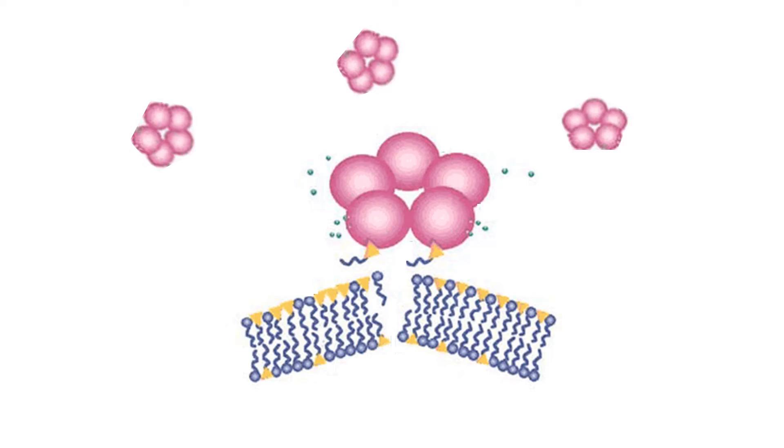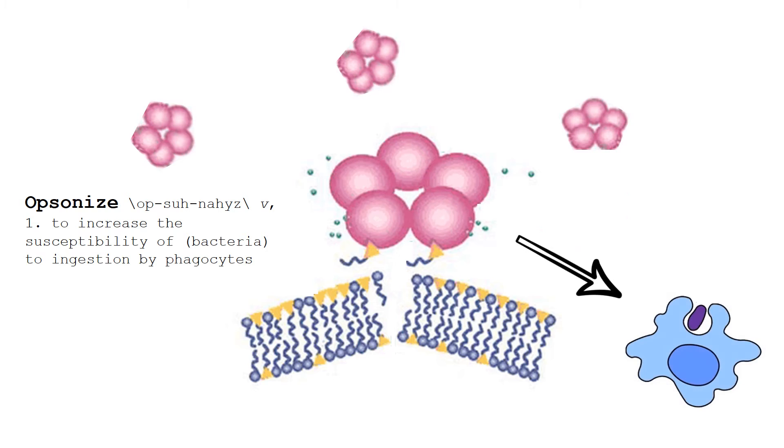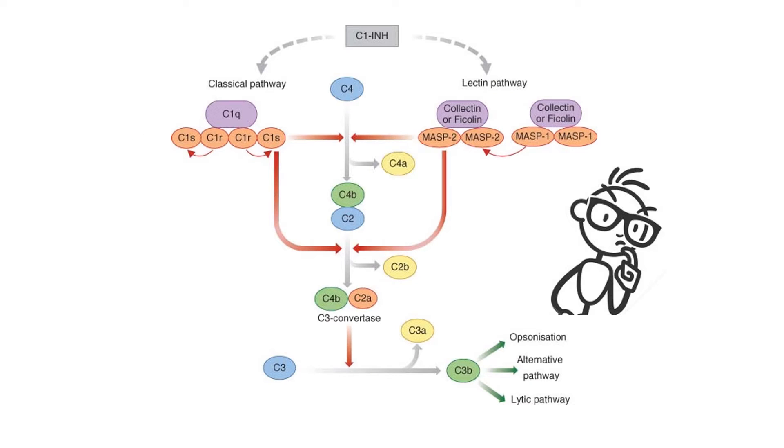When CRP binds to this ligand, it opsonizes the cell, which means that it signals for the cell to be taken up by phagocytosis. It does this by initiating the classical complement system, or C1Q pathway. This is a somewhat complicated pathway, so we won't go over this in depth.